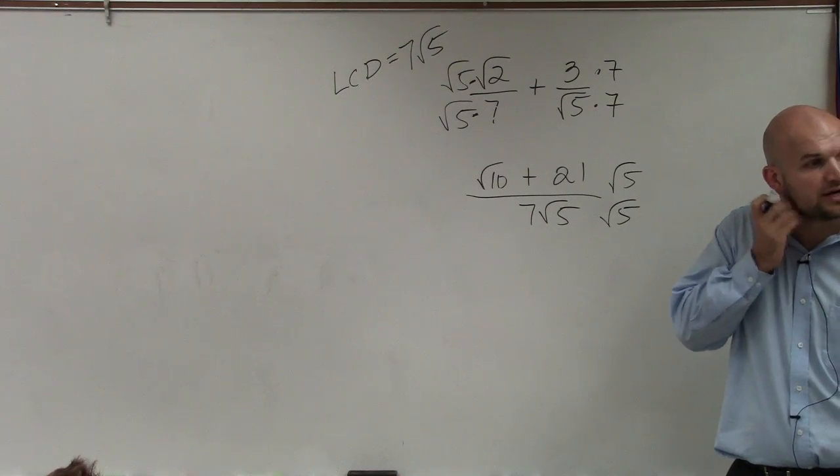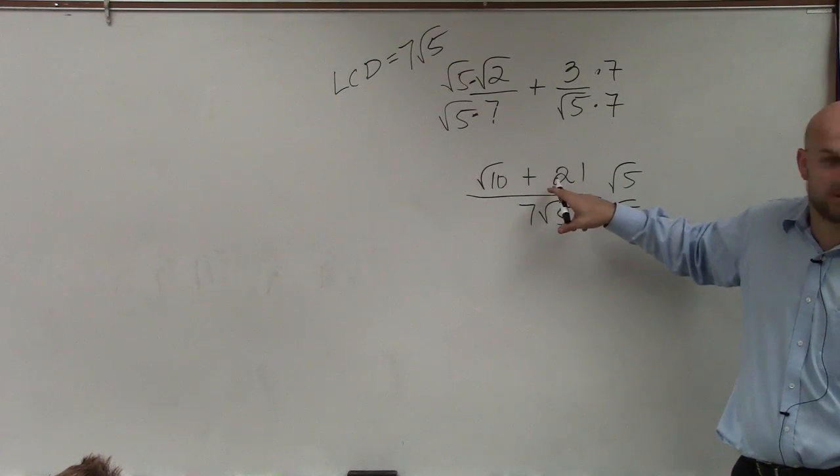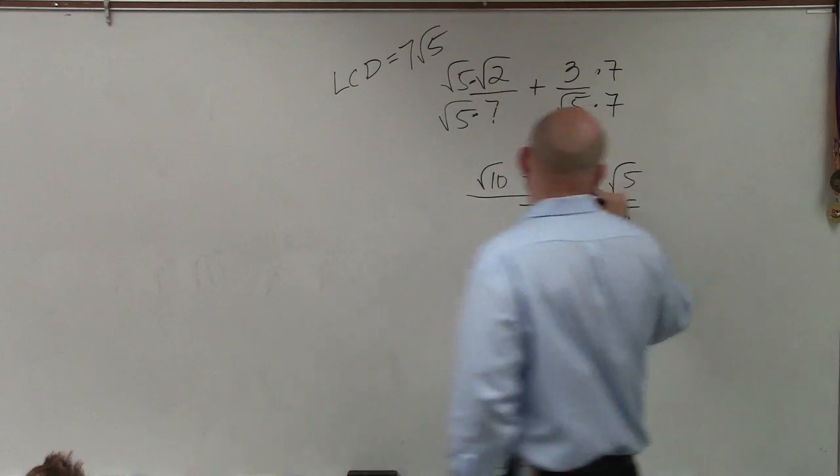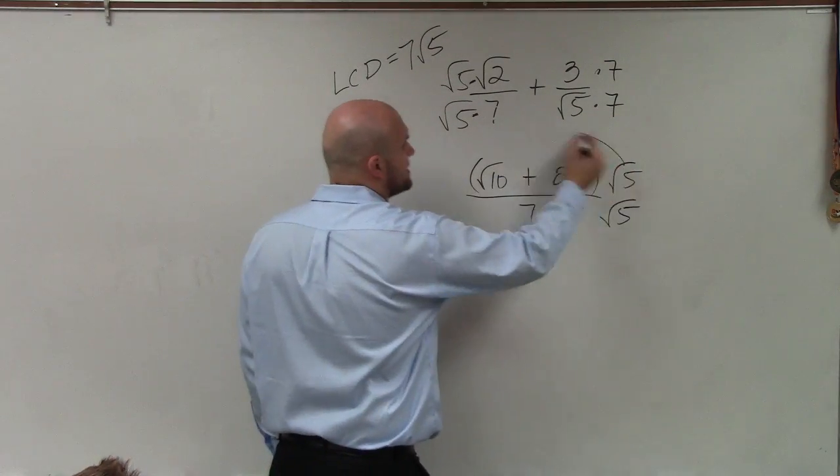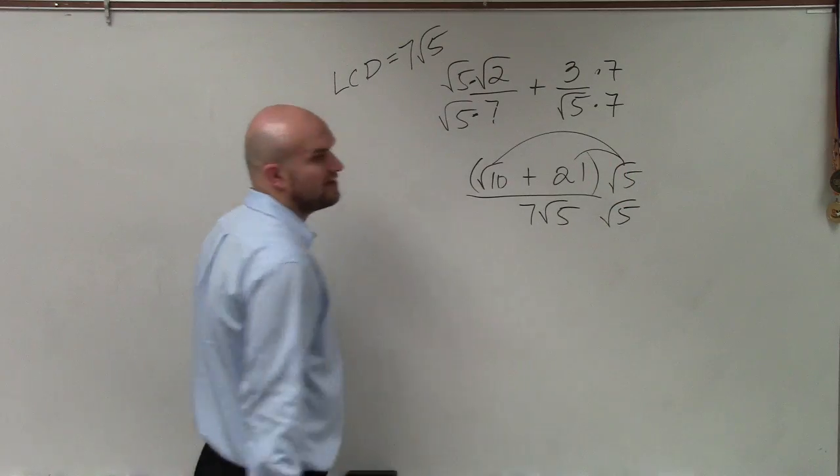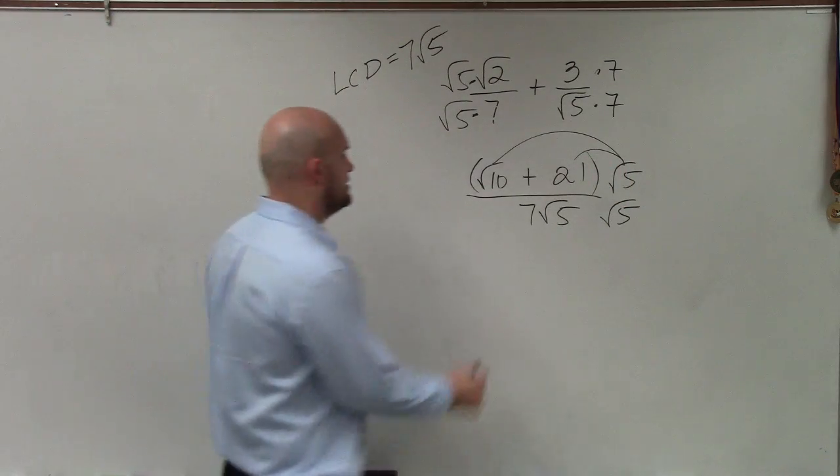However, when we look at the numerator, we see we do not have a monomial. We have a binomial, meaning we need to put this in parentheses. So when I multiply by √5, I need to multiply √5 times both terms.